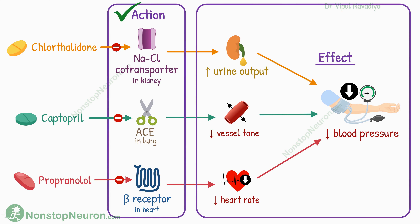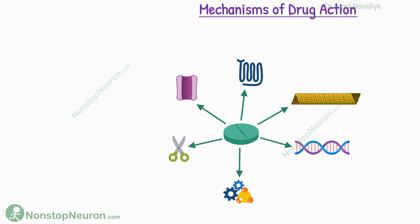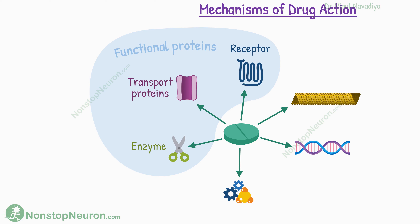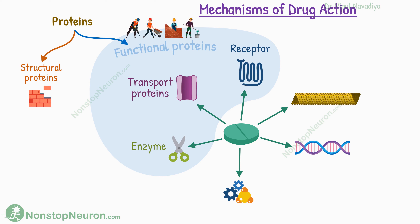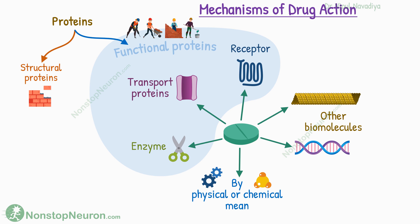Now let's see the different mechanisms of action. Drugs can target a wide range of biomolecules in our body. The majority of drugs target functional proteins, including enzymes, transport proteins, and receptors. Structural proteins are like building blocks of the body, while functional proteins are the working force — and most drugs target this working force. However, a few drugs target other biomolecules like tubulin and DNA. Finally, some drugs act purely by physical or chemical means.